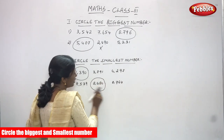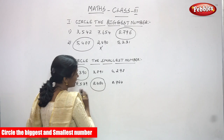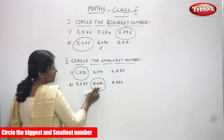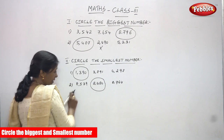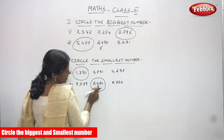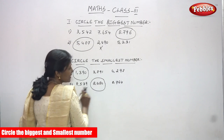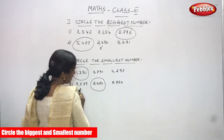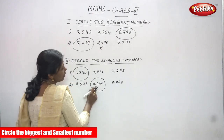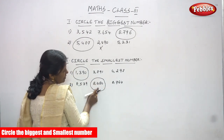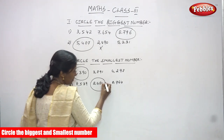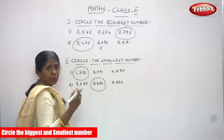8480 is the smallest number in this series. Out of the three numbers given, 8480 is the smallest. I have given the proper explanation — I think you understand the concept very clearly. If you have a four-digit number, the first step is to check the thousands place value.